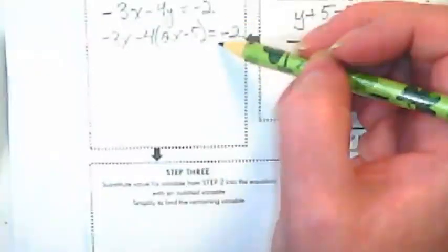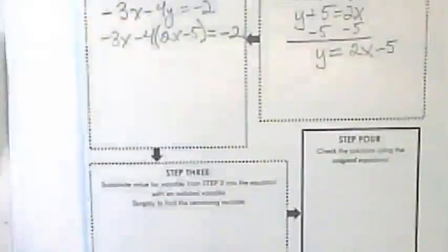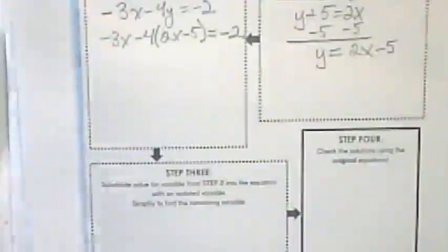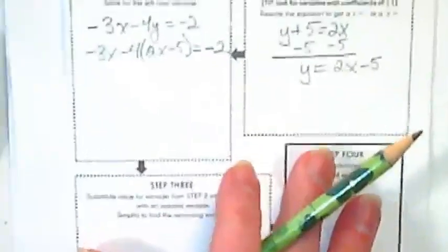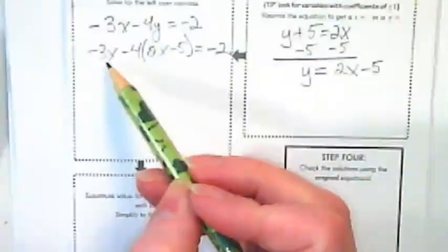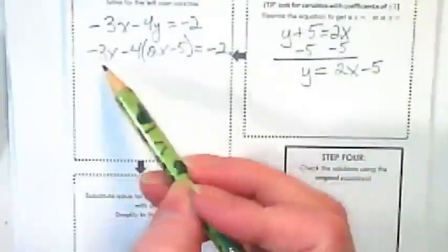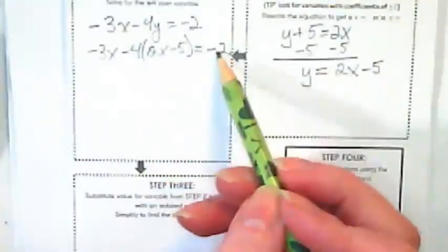We're going to go back now and solve for the variable that's there. The directions say to solve for the leftover variable. What that means is once I've substituted this in for the y, all that's in this equation that's left is the x, and we're going to end up solving for it.